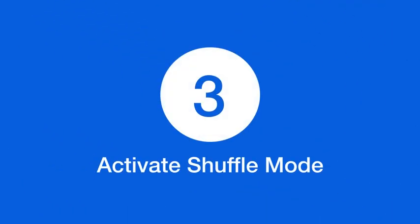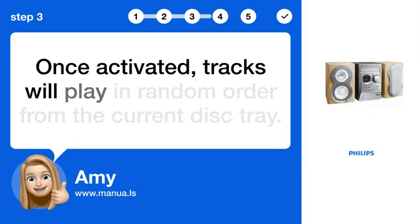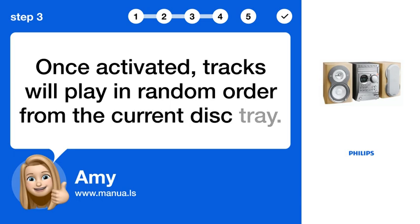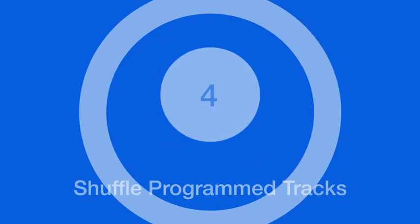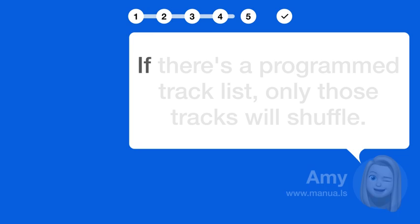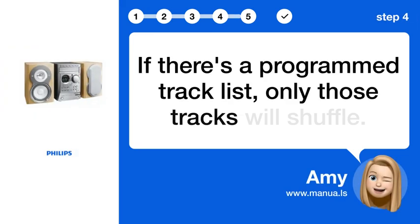Step 3. Activate shuffle mode. Once activated, tracks will play in random order from the current disk tray. Step 4. Shuffle program tracks. If there's a programmed track list, only those tracks will shuffle.